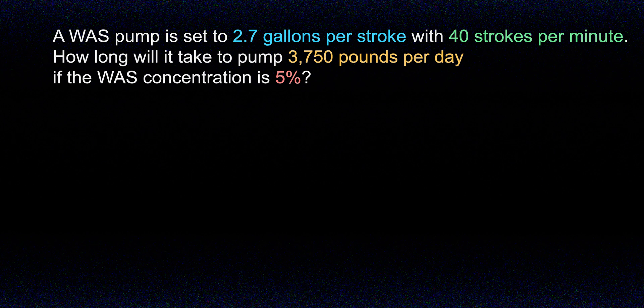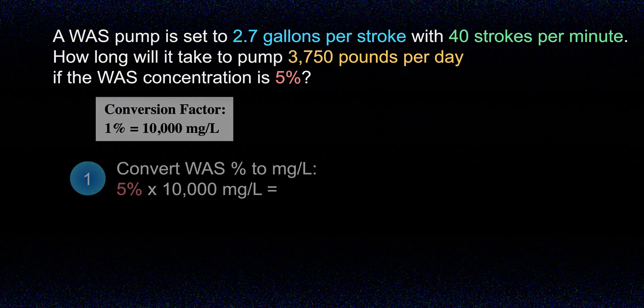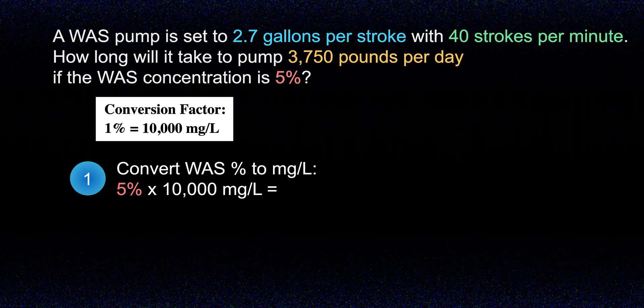In this question, we are asked how long it will take to pump 3,750 pounds of solids contained in the waste-activated sludge per day, and the answer needs to be in minutes. We are given that the pump moves 2.7 gallons per stroke and works at 40 strokes per minute, and the WAS concentration is 5%. The very first step is to convert the sludge concentration from a percentage into milligrams per liter. Remember that 1% equals 10,000 mg/L, so our 5% sludge concentration equals 50,000 mg/L.